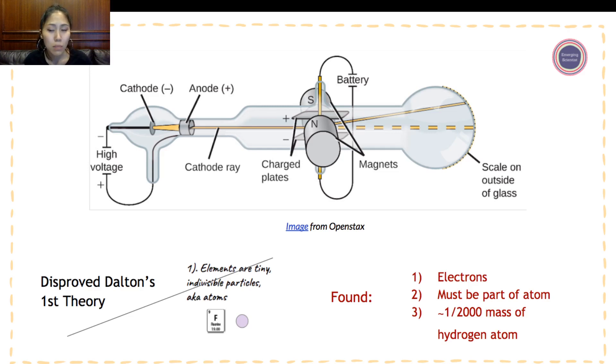He found that it must be part of an atom. Otherwise, where did this negatively charged particle come from? And he also found that electrons were approximately one over two thousand the mass of a hydrogen atom. So they're really, really tiny.